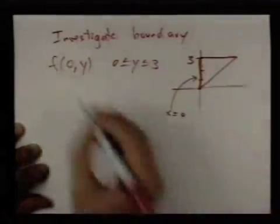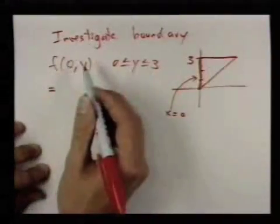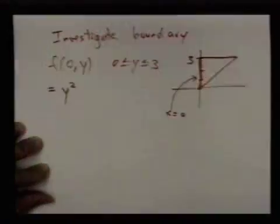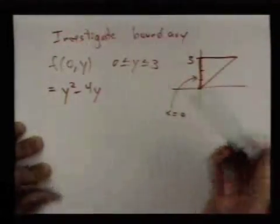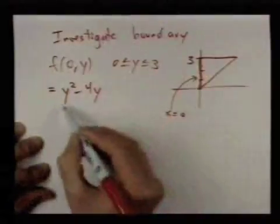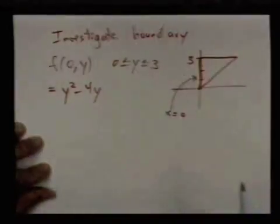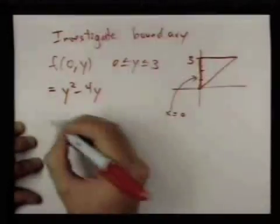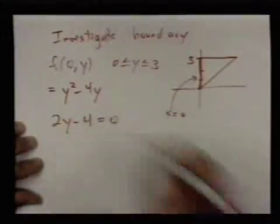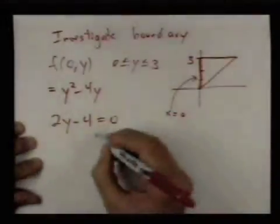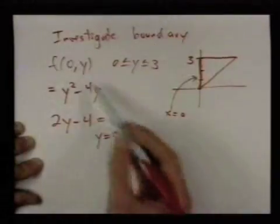In this specific example, if I plug 0 and y into the function I've got, I get y²-4y. Now we're doing a one-variable calculus problem—we want to find the absolute max and min of this function on the interval from 0 to 3. This is just a parabola. We take the derivative and set it equal to 0, and this is 0 when y=2. That's the only critical point of this one-variable function.